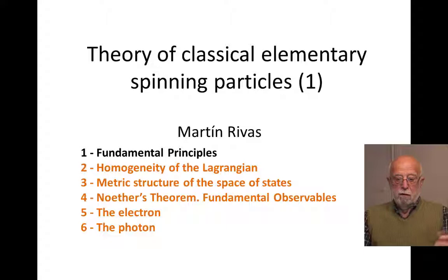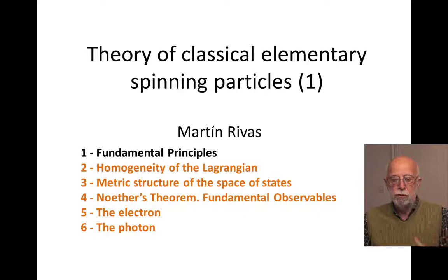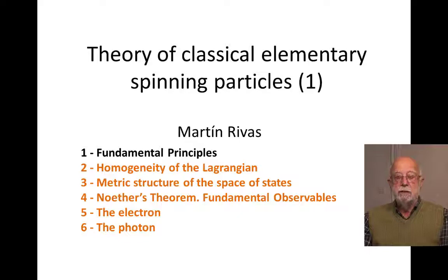The fourth lecture: because we have a Lagrangian for describing an elementary particle, we shall analyze the important theorem — Noether's theorem — to construct for some particular elementary particle the fundamental observables like energy, linear momentum, angular momentum, spin, and so on. The last two lectures will be devoted to the analysis of two particular examples of elementary particles: the electron and the photon. We shall see that when quantizing both objects, the electron will be an object of spin one-half and the photon of spin one.